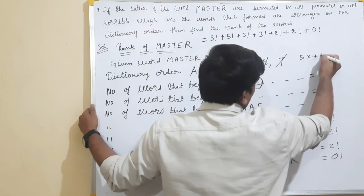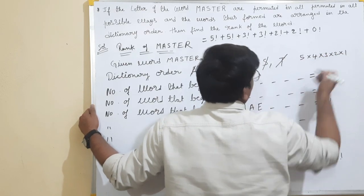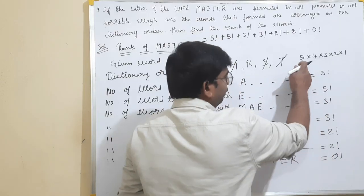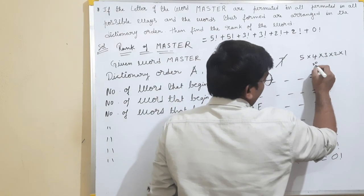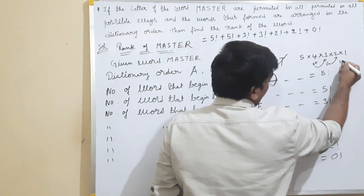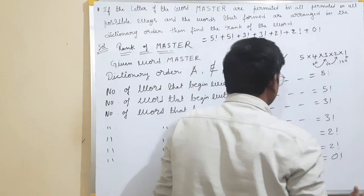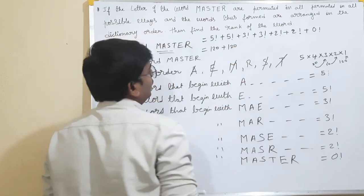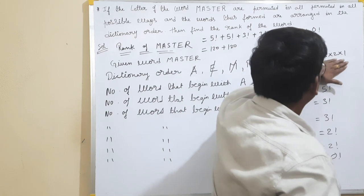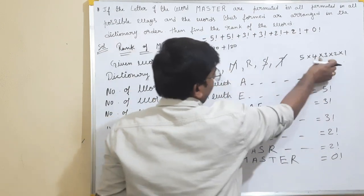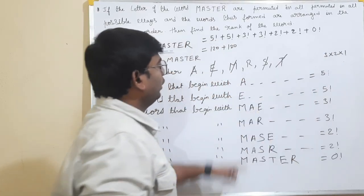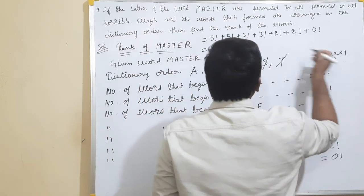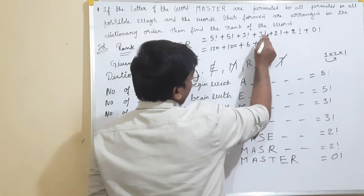5 factorial: 5, 4, 3, 2, 1. So 5×4 = 20. 20×3 = 60. 60×2 = 120. 120×1 = 120. So 5 factorial = 120. E, 5 factorial = 120. If you do 3 factorial: 3, 2, 1. 3×2 = 6. So this is 6. 3 factorial = 6.